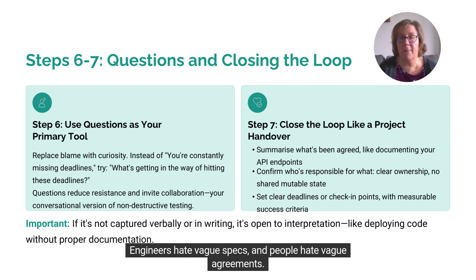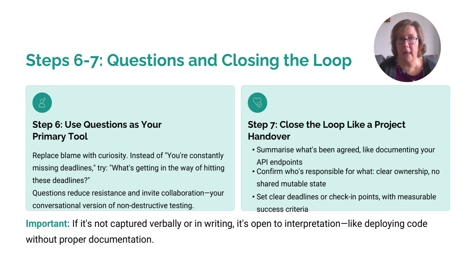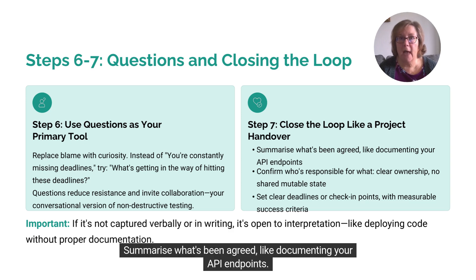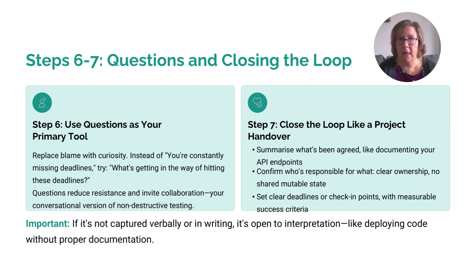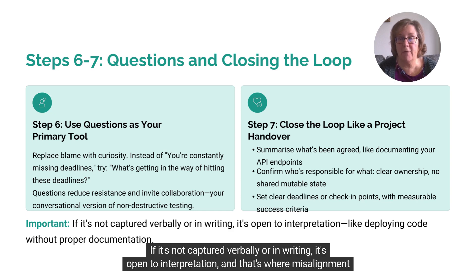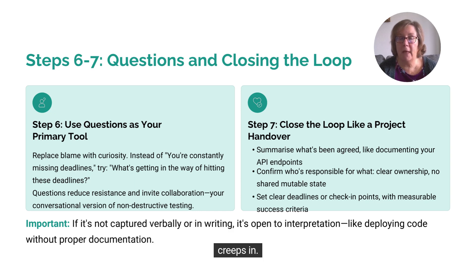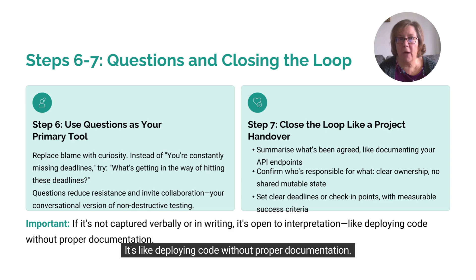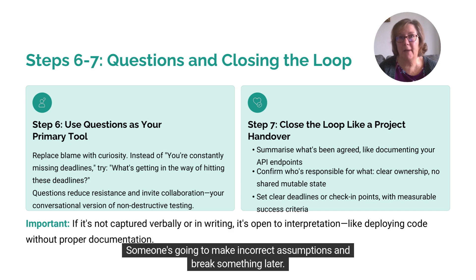Engineers hate vague specs, and people hate vague agreements. Before you leave that conversation, summarise what's been agreed — like documenting your API endpoints. Confirm who's responsible for what: clear ownership, no shared mutable state. Set clear deadlines or check-in points with measurable success criteria. If it's not captured verbally or in writing, it's open to interpretation, and that's where misalignment creeps in. It's like deploying code without proper documentation — someone's going to make incorrect assumptions and break something later.